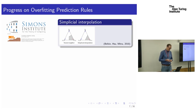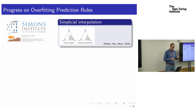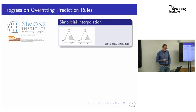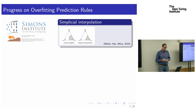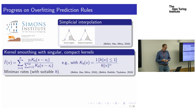The first example of this sort of interpolating prediction rule that does well was simplicial interpolation — something with the flavor of a nearest-neighbor rule but doing linear interpolation within a simplex in a simplicial decomposition of the training sample. There are other examples involving kernel smoothing from Misha Belkin and Daniel Hsu, and subsequent work with Rakhlin and Srebro — looking at kernel smoothing with kernels that go to infinity at zero, guaranteeing interpolation.